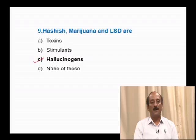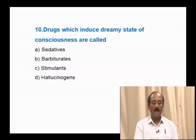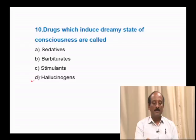Question number 10: Drugs which induce a dreamy state of consciousness are called — sedatives, barbiturates, stimulants, hallucinogens. The dreamy state of consciousness is induced by abusing drugs like LSD, barbiturates and other hallucinogens. Such a dreamy state of consciousness is called hallucinogenic. The correct answer is option D.